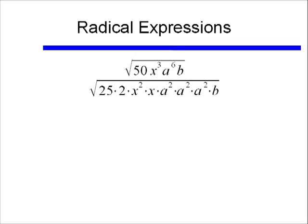A to the 6 is equal to a squared times a squared times a squared, because we remember that when I multiply exponents, I actually end up adding them. So a squared times a squared times a squared is equal to a to the 2 plus 2 plus 2, or a to the 6. And again these are perfect squares, and we leave b as is.